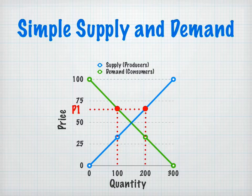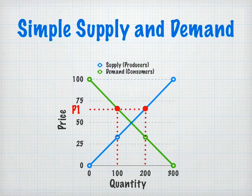Then our second point: at $66, producers are willing to supply 200 of whatever that good is. They're willing to make 200 of a certain good. Let's say for our purposes today we're talking about Xbox 360 games. So at market price one, consumers at $66 would like to purchase 100 Xbox 360 games, and producers at $66 would be willing to produce 200 Xbox 360 games. Here's a problem: we have production of 200 games, but only demand for 100.